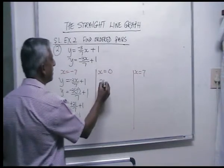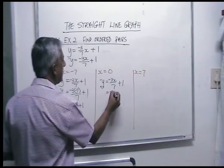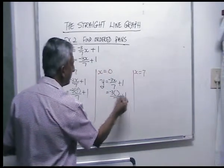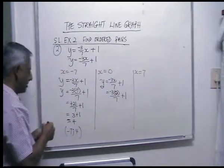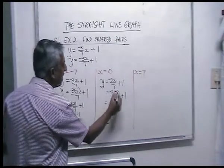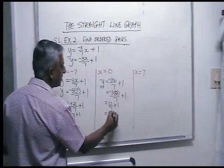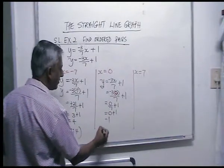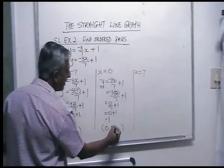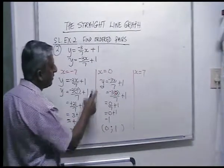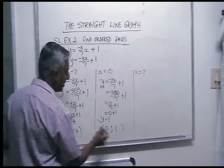For x is zero: minus three times zero is zero, over seven plus one. Zero divided by seven is zero, zero plus one is one. Your ordered pair is x is zero, y is one.